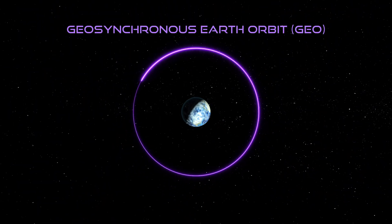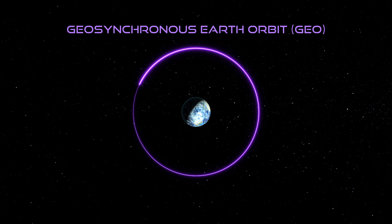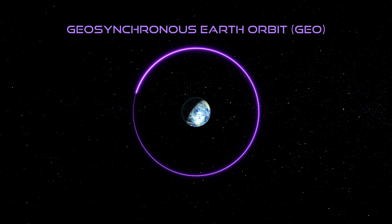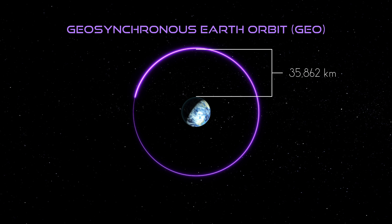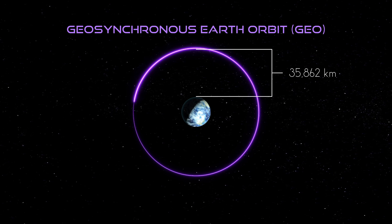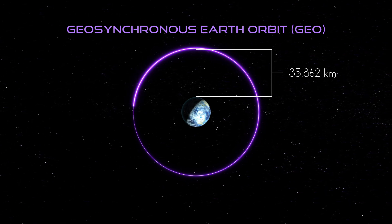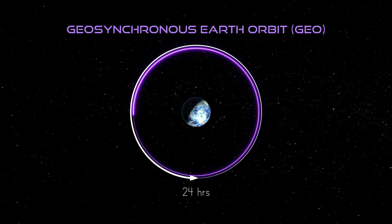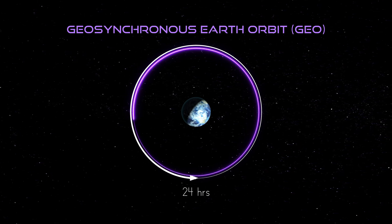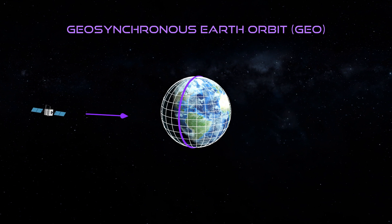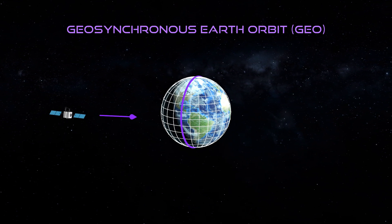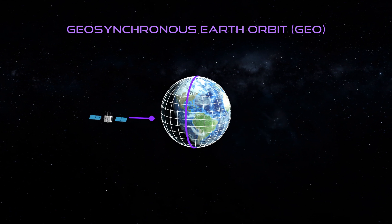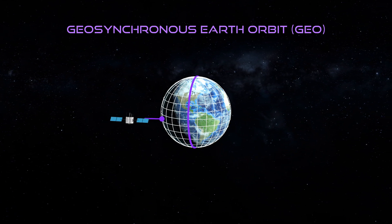Well past LEO is GEO. At GEO, the orbital altitude is an exact value — not a range — at 35,862 kilometers. The orbital velocity is 3 kilometers per second and the period is 24 hours. At GEO, the satellite stays over the same longitude of the Earth, traveling at a velocity in sync with the Earth's rotation.